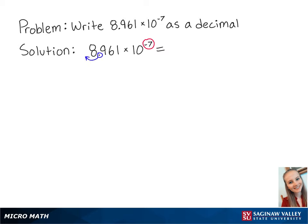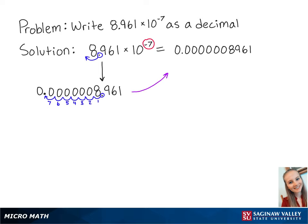Since 10 is raised to the negative 7th power, we're going to move the decimal to the left 7 times. After doing this, we need to add the zeros. This completes the problem, and this is the final answer.